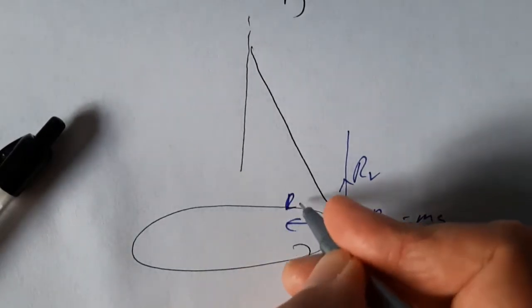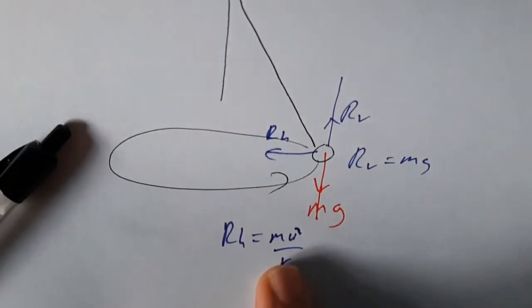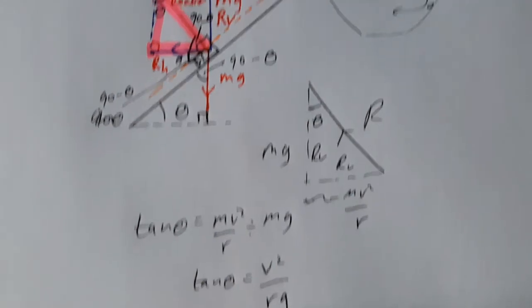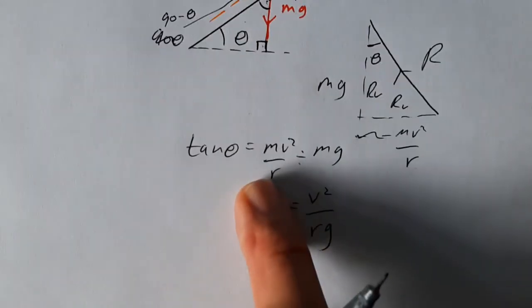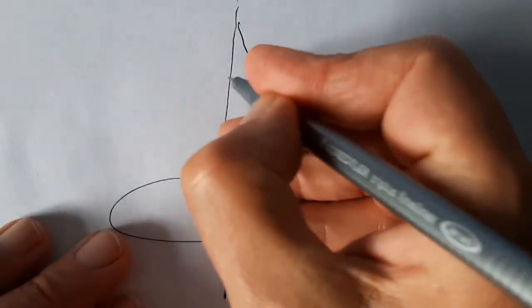And RH, the horizontal component, must equal mv squared over r. Of course, in both cases, mv squared over r could be replaced by mr omega squared if you're dealing with angular velocity.